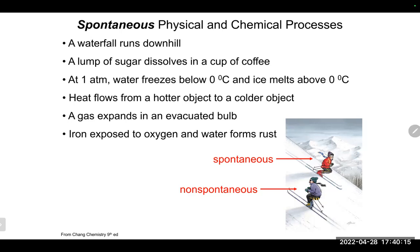Here is a list of physical and chemical processes which are spontaneous: water runs downhill; a lump of sugar will dissolve in coffee; heat flows from the hotter object to the colder object; iron exposed to a little oxygen and moisture will form rust. Skiing downhill is also spontaneous — just go over the edge and you will go down.